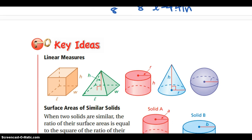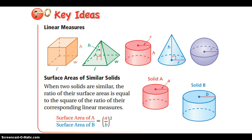Next up is our second key idea: linear measures. These are all the shapes we've looked at — rectangular prism, triangular prism, cylinder, cone, and sphere. When two solids are similar, the ratio of their surface areas is equal to the square of the ratio of their corresponding linear measures. This should look very familiar from chapters 3 or 4.